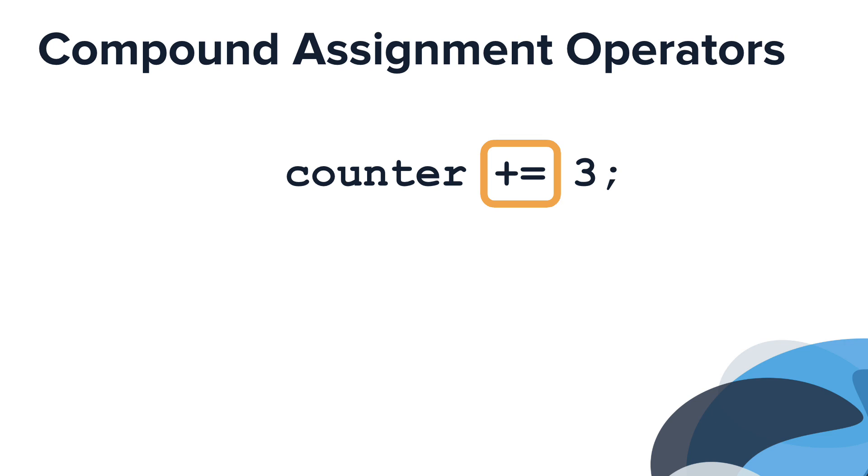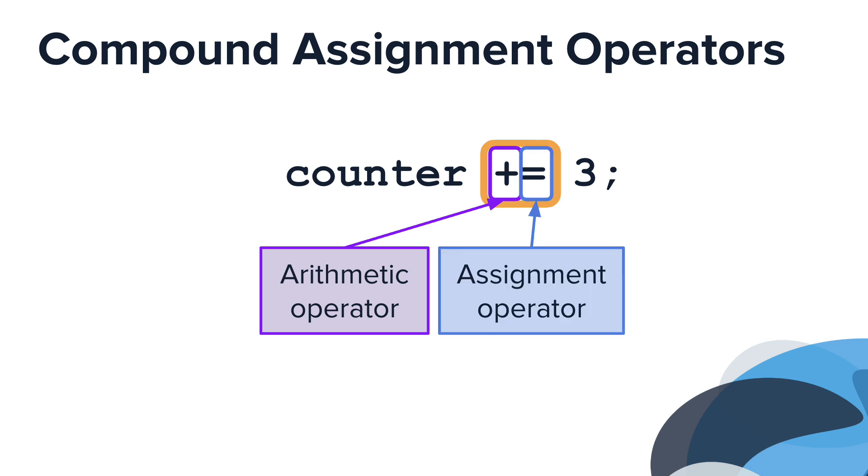These shortcuts use what is called a compound assignment operator. A compound assignment operator combines the arithmetic operator, such as a plus for addition or minus for subtraction, and the assignment operator.